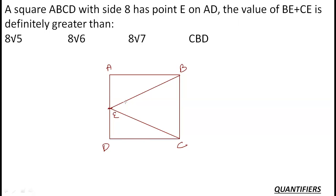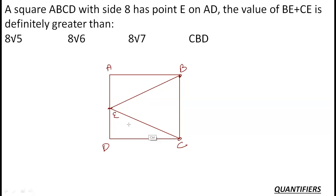Let's say there are two people standing — one is at point B and one is at point C — and I want them both to meet, traveling a minimum distance, at the same speed. If I make them meet at a non-central point, one person travels too much and the other too little. To minimize total distance, I'll have them meet at the midpoint of AD.